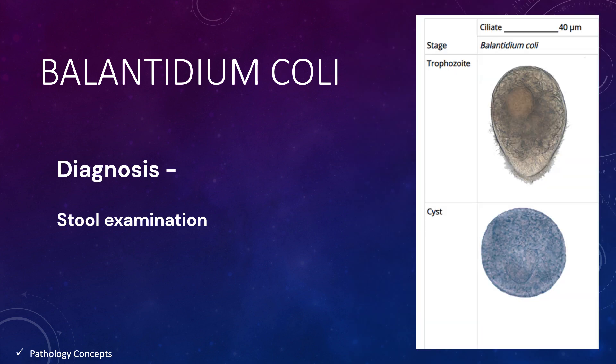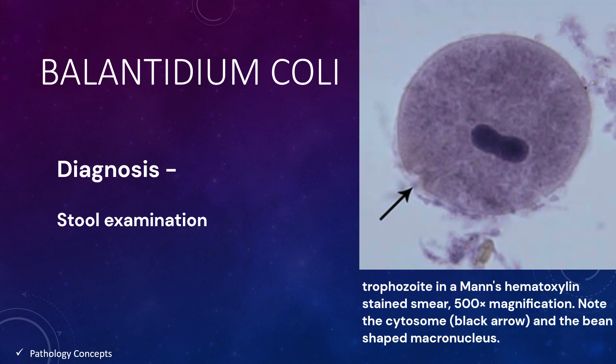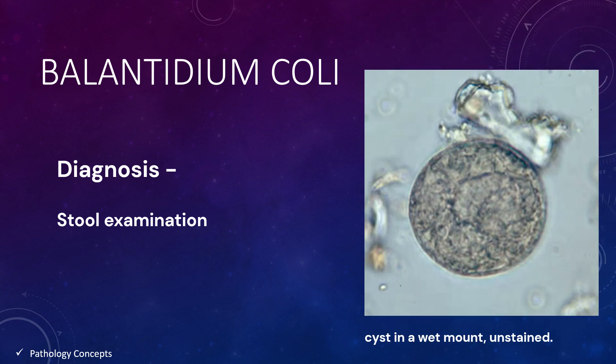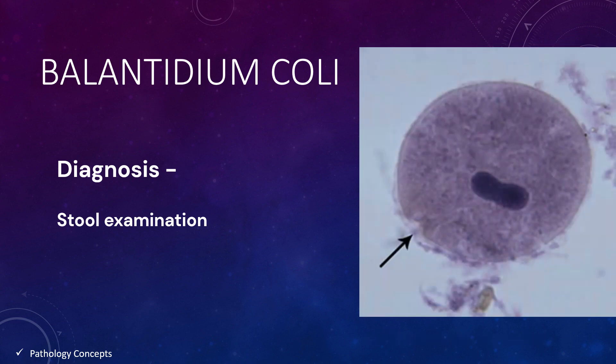Diagnosis is mainly done by stool examination. Both Balantidium coli trophozoites and cysts may be shed in the stools; both stages may occur in diarrheal stools, and usually only cysts are observed in formed stools. The trophozoites are characterized by large size, presence of cilia on the surface, a cytostome, and a bead-shaped macronucleus which is often visible. The cysts are seen less frequently and range in size from 50 to 70 microns. B. coli trophozoites can also embed into tissue.